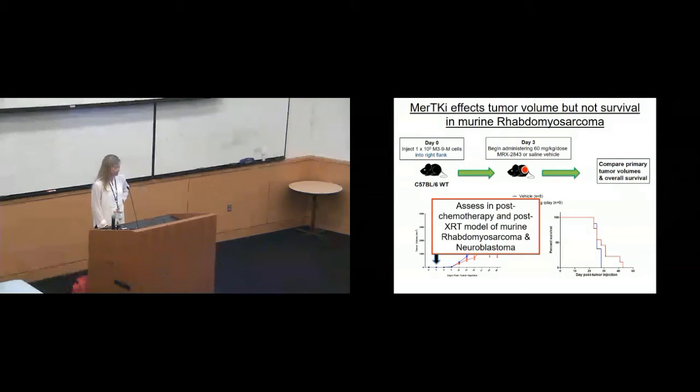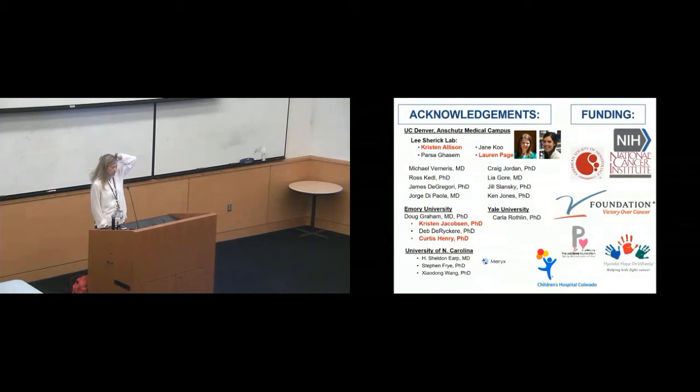So I'm just going to show you real quick a little bit of information about these other tumor models, specifically the rhabdomyosarcoma that Jane Koo's been working on. And what she found, at least this was a flank model, we put some of these rhabdo cells into the flank, we started administering either the MER-TK inhibitor or saline, and overall compared tumor volumes and overall survival. So interesting, what she found was at a certain point definitely the saline mice had their tumor outgrowth, whereas this was blunted quite a bit by the MER-TK inhibitor. However, there really wasn't an extension in survival. So, is this a colder tumor, is this really because these cells don't express a ton of phosphatidylserine, not entirely clear, but our next step is to assess this in a post-chemotherapy and eventually a post-radiation therapy model of both murine rhabdo and neuroblastoma. So, with that, I'll head to my acknowledgement slides. Obviously, the majority of this work was done by two amazing young ladies, Kristen Allison and Lauren Page, who has since gone on to med school at University of Utah, and then Jane, who's a fellow in my lab and is working on the solid tumor models, and then my amazing group of mentors who have helped guide me in this fun little game. In addition to my previous mentor, Doug Graham, and some of the ALL work was done by Kristen Jacobson and Curtis Henry. Carla Rothlin gave us those Merflox mice, and we get our drug free of charge from Meryx.